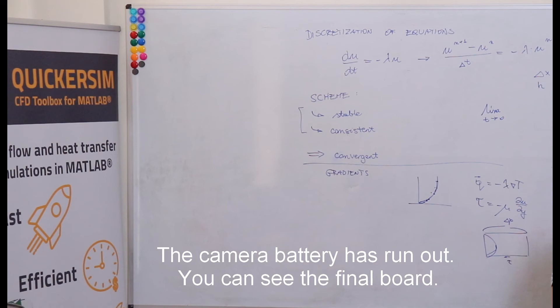If it's consistent, so it represents the equation that you want it to solve, and if it's stable, then it will be convergent. What means convergent? It means that in this limit, the solution of the numerical model will converge exactly to the analytical solution.